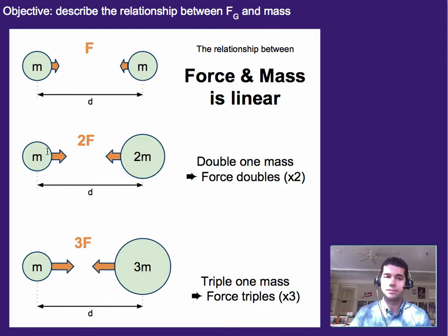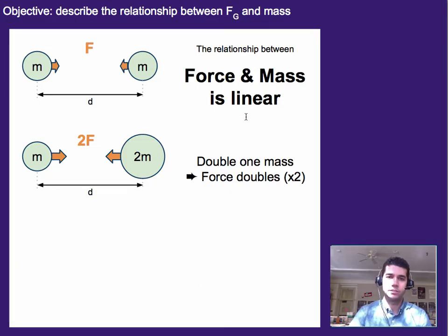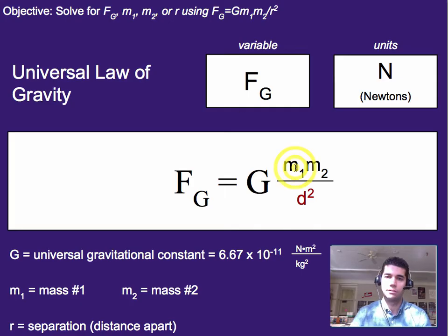Now, if you doubled both masses, that would be like times two for one mass and times two for the other, so it would actually be four times as big. So this relationship between force and mass is linear when you're only talking about a single mass. It compounds if you use both masses in this sense. We can see that by this equation right here.